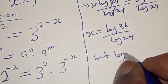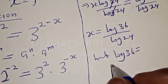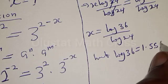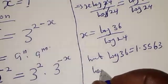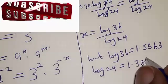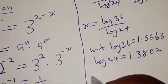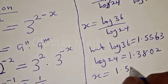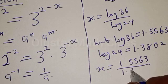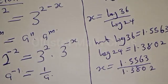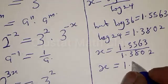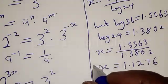Now log 36 is equal to 1.5563 and log 24 is equal to 1.3802. Therefore our s is equal to 1.5563 divided by 1.3802. And our final answer becomes s is equal to 1.1276. This is our final answer.